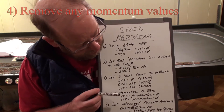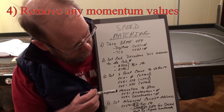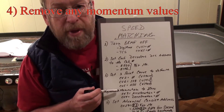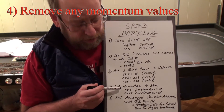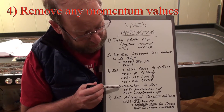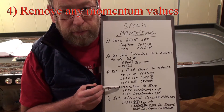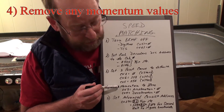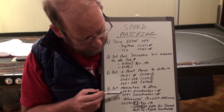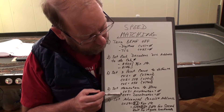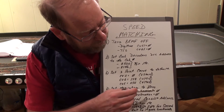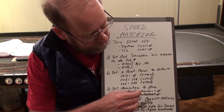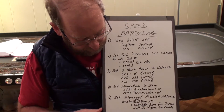Then I want to set the momentum to zero, because I'll play around with that later if I want. So CV3 and CV4 both have to be set to zero.